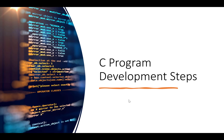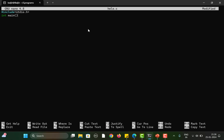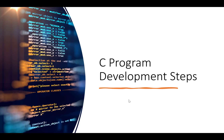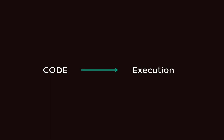Hello everyone. If you have been writing C programs, there are two or three steps that you really do: you write the C program in an editor, then you compile it, and finally run it. But what happens once you save it and press the compile button? What are the intermediate steps? How does a high-level C program get converted into machine language? You'll understand that in this video.